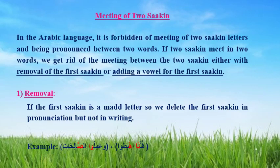Another example: Wa'amilu al-Salihat. The waw before the dhamma makes it a madda letter, and this waw is the first sakin. The second sakin is the saad. So we get rid of the first sakin by removing the waw. In continuation we say: Wa'amilus-Salihat — only with the dhamma. But in stopping we say: Wa'amilu — with two counts. In continuing we say: Wa'amilus-Salihat.